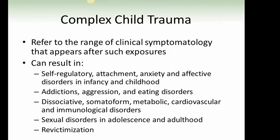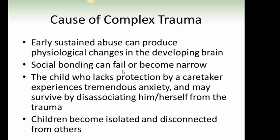Complex child trauma refers to the range of clinical symptomatology that appears after such exposures. It can result in self-regulatory, attachment, anxiety, and affective disorders in infancy and childhood; addictions, aggression, and eating disorders; dissociative, somatoform, metabolic, cardiovascular, and immunological disorders; and sexual disorders in adolescence and adulthood, including re-victimization. Early, sustained abuse can produce physiological changes in the developing brain. Social bonding can fail or become narrowed. The child who lacks protection by a caretaker experiences tremendous anxiety and may survive by dissociating from the trauma, becoming isolated and disconnected from others.